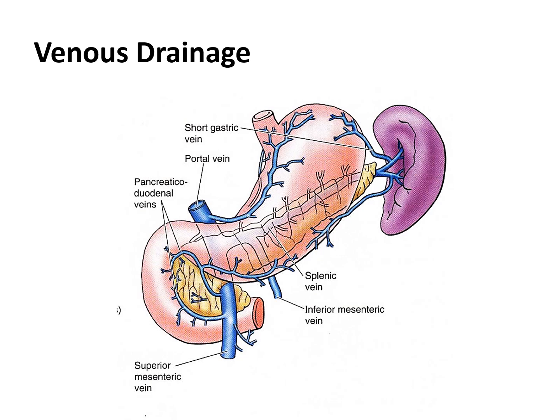The nerves of the pancreas derive from the vagus and thoracic splenic nerves that pass through the diaphragm — parasympathetic and sympathetic nerves. They reach the pancreas by passing along the arteries from the celiac and superior mesenteric plexuses. They are vasomotor, but some are parenchymal; the parasympathetic fibers are distributed to the pancreatic acinar cells and islets.